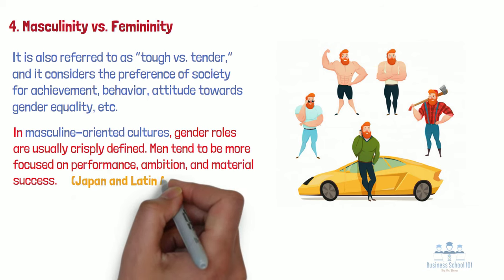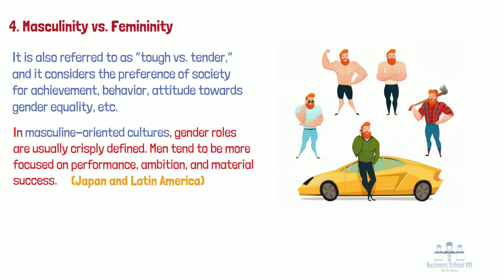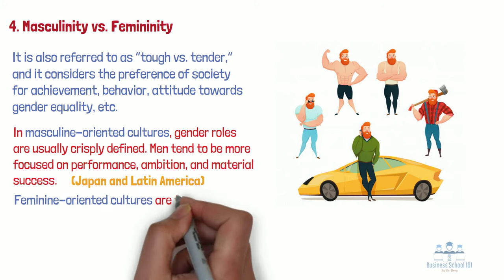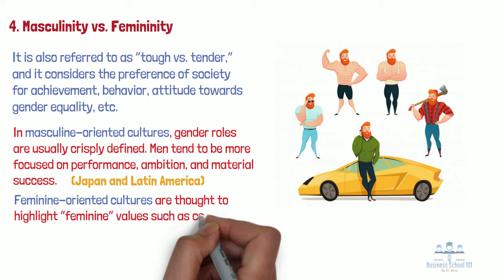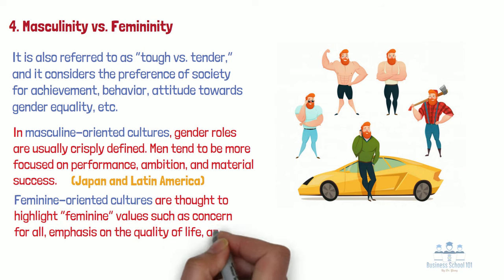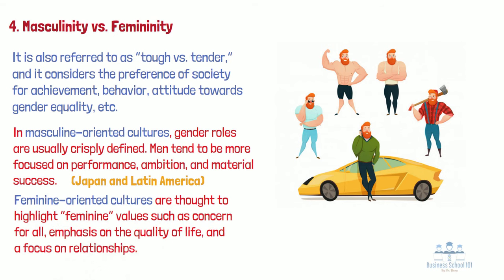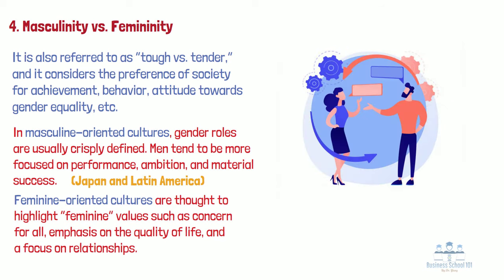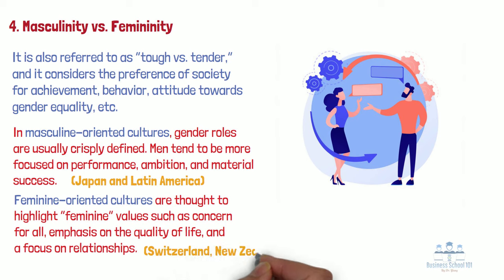By contrast, feminine-oriented cultures highlight feminine values such as concern for all, emphasis on the quality of life, and a focus on relationships. In these cultures, both genders swap roles with the focus on quality of life, service, and independence. The Scandinavian cultures rank as feminine, as do cultures in Switzerland and New Zealand. The United States is actually more moderate — its score is ranked in the middle between masculine and feminine classifications.